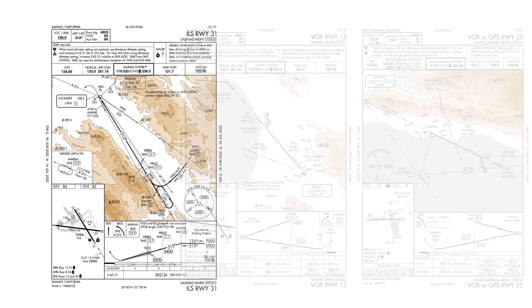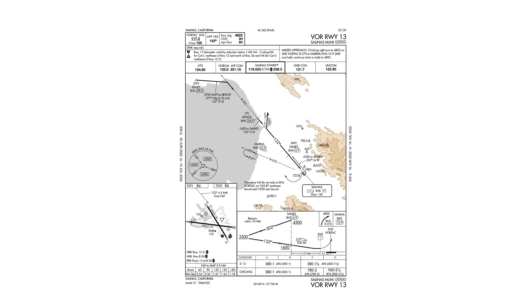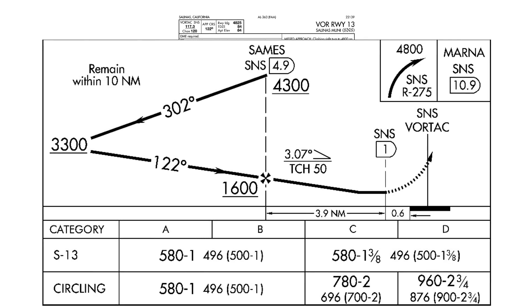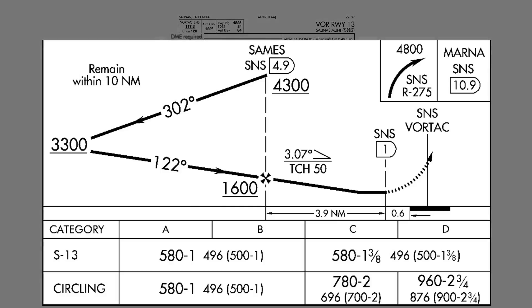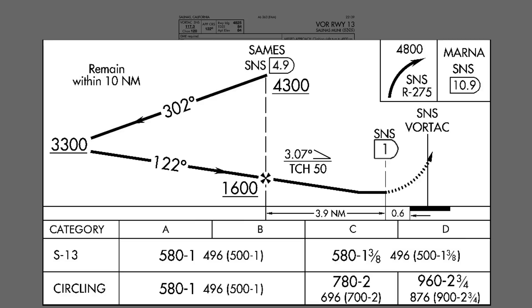So that's the precision approach. What about a non-precision approach like the VOR into the opposing runway at Salinas? We don't have vertical guidance, so there's no glide slope to help us identify a missed approach point like on the ILS. On this particular approach, we'll use DME to identify it. The approach plate tells us explicitly that DME is required for this reason and a few others. Our minimum altitude is 580 feet for the straight-in approach. We'll use DME to identify the final approach fix, SAME, which is at 4.9 DME, as well as the missed approach point at 1 DME from the Salinas VOR.